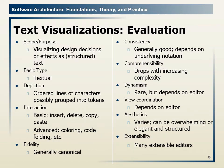If we evaluate based on the same 11 criteria, first of all scope and purpose — realization, design decision, or effect as structured text. We can take text and visualize our design decision. The basic type is textual, which is the depiction mechanism: ordered lines of characters possibly grouped into tokens.